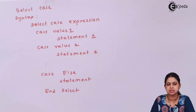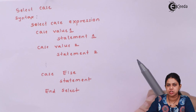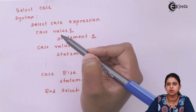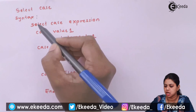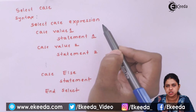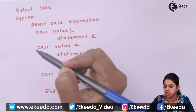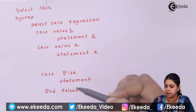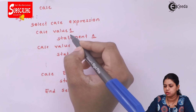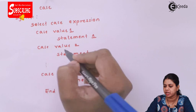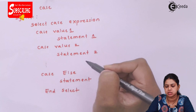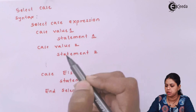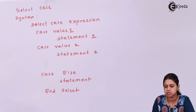Next is Select Case, which is similar to Switch in C++. It checks multiple conditions. The syntax is: Select Case expression, Case value one Then statement one, Case value two Then statement two, Else end statement, End Select.